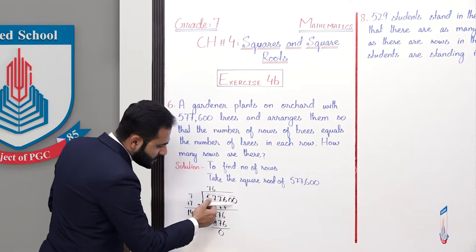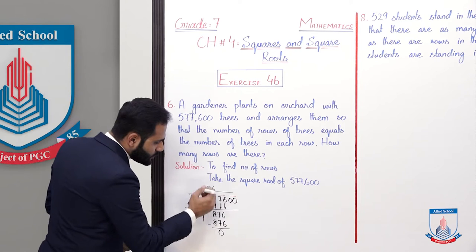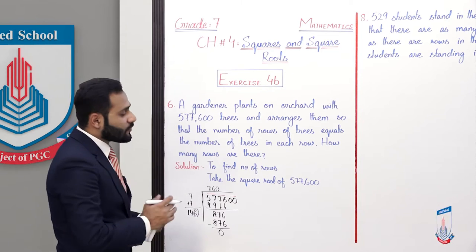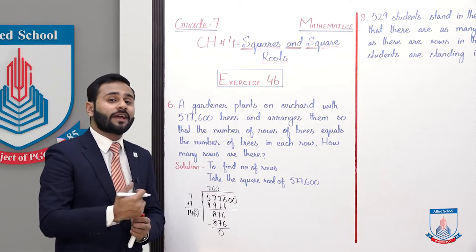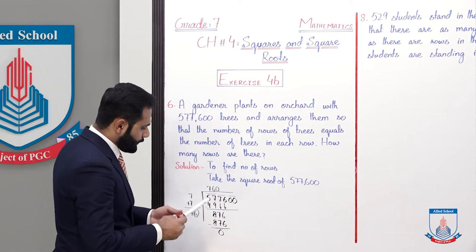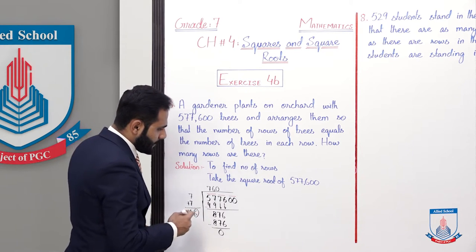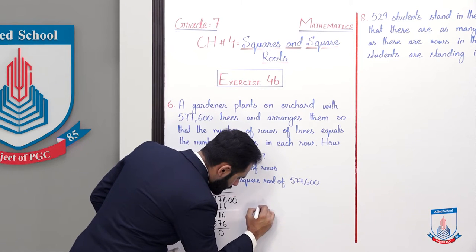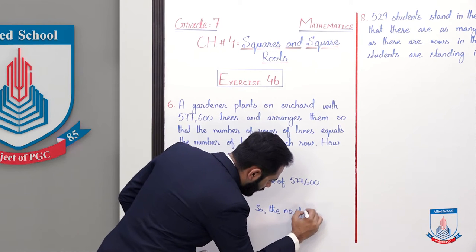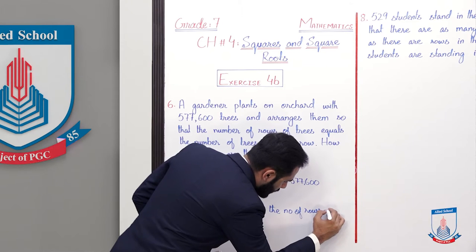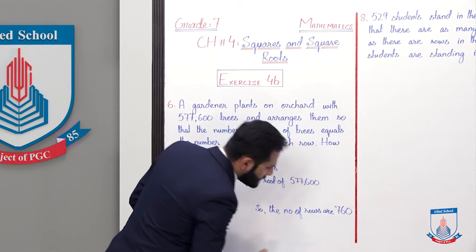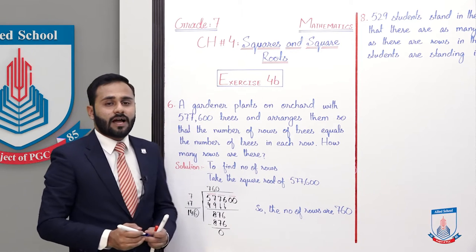Clear? The last pair is 00, so we bring it down. That means 760 rows will be available, and in one row, 760 trees will be planted. Write the statement: the number of rows are 760. I hope this question is understood.